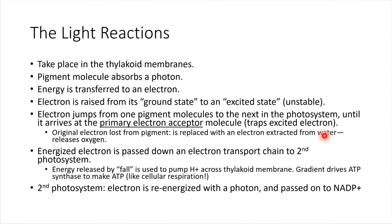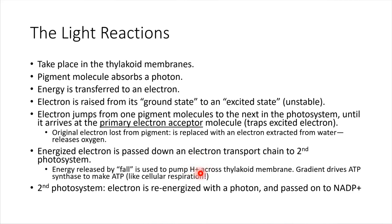An electron is extracted from water to replace that original electron. In the process, the water molecule falls apart and oxygen gas gets released. Our energized electron then gets handed down an electron transport chain and heads off to another photosystem. In the process, as it's being handed down the electron transport chain, it provides energy to pump protons across the membrane — this should sound familiar from cellular respiration. Those hydrogen ions get pumped across, building up a gradient that drives the synthesis of ATP.